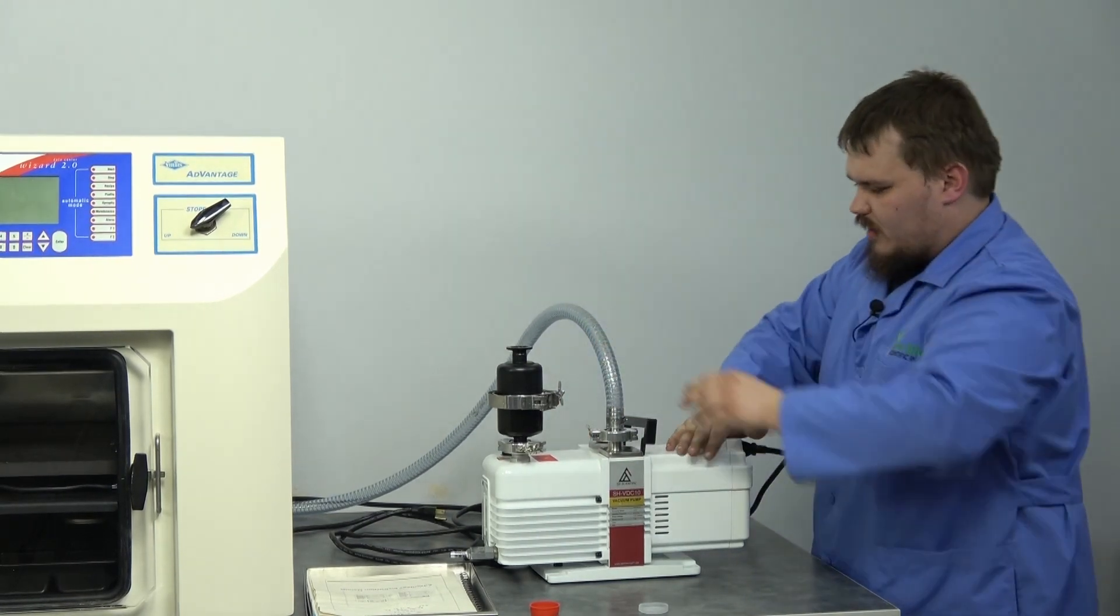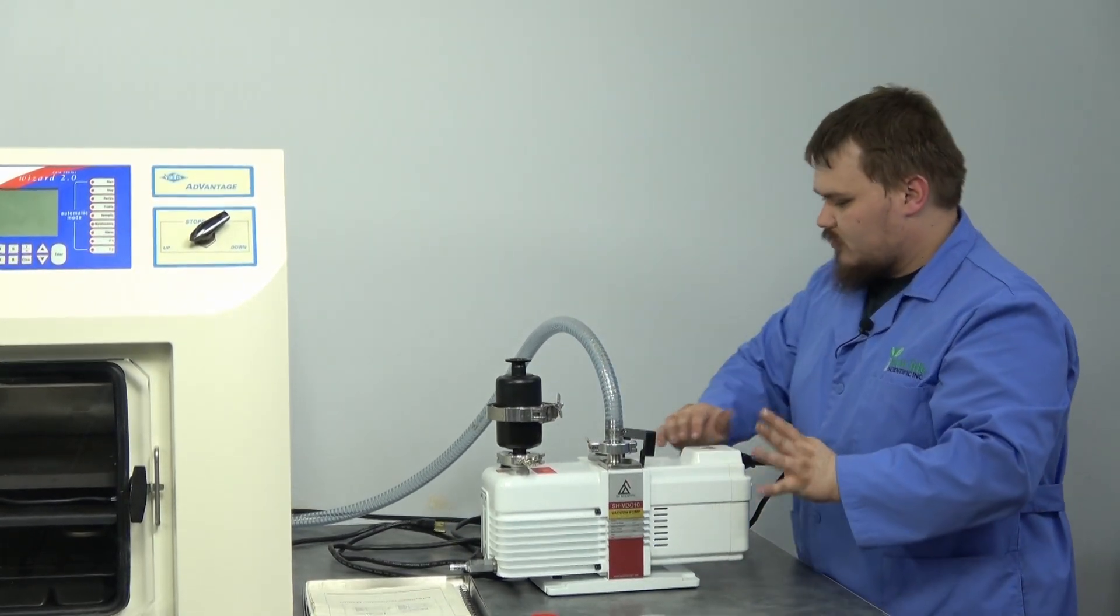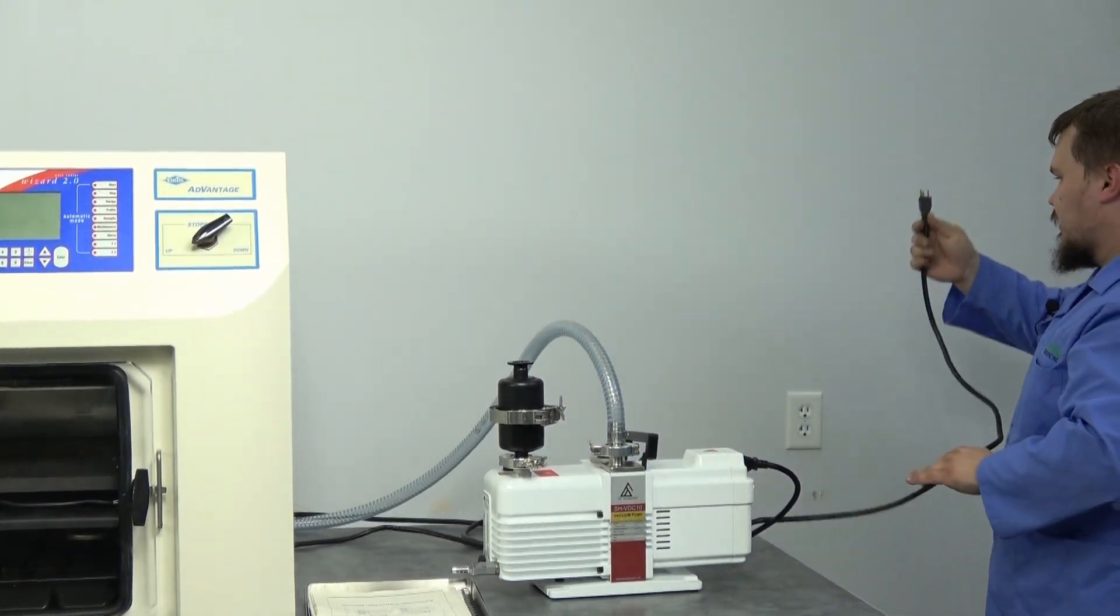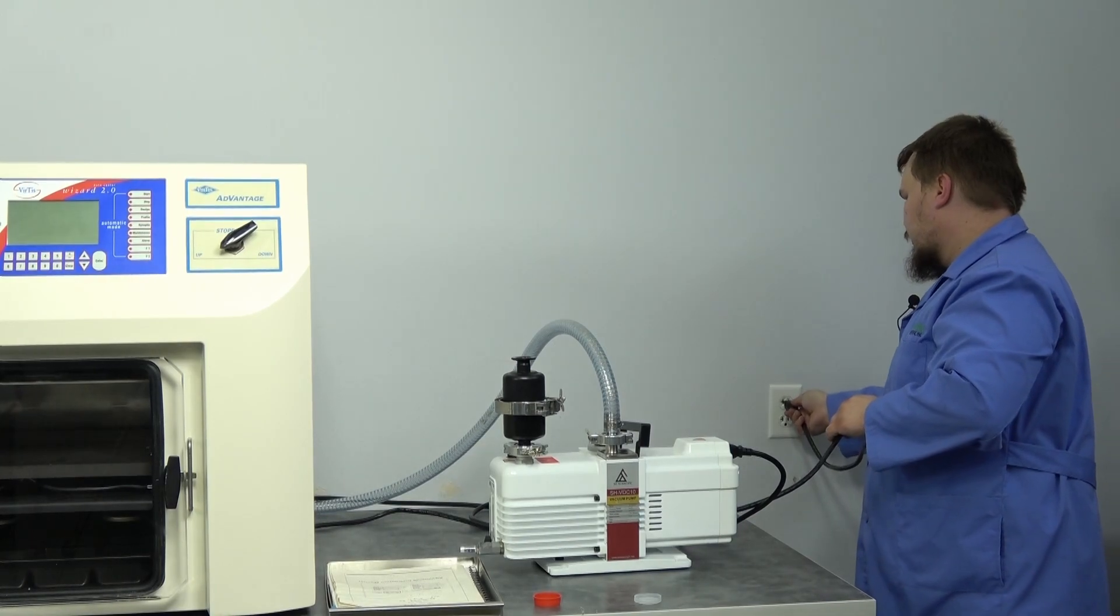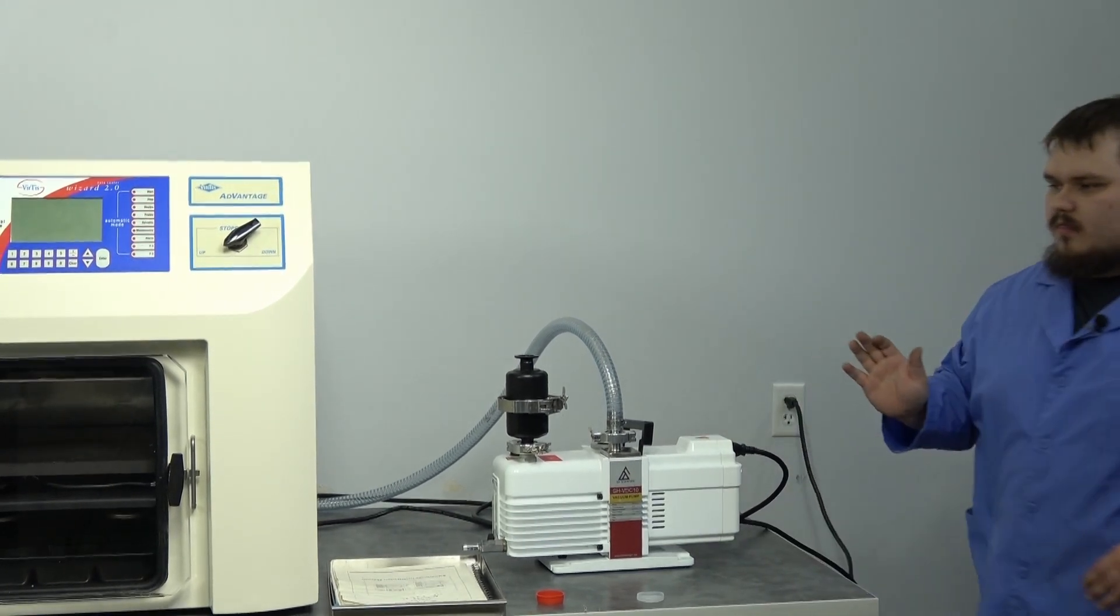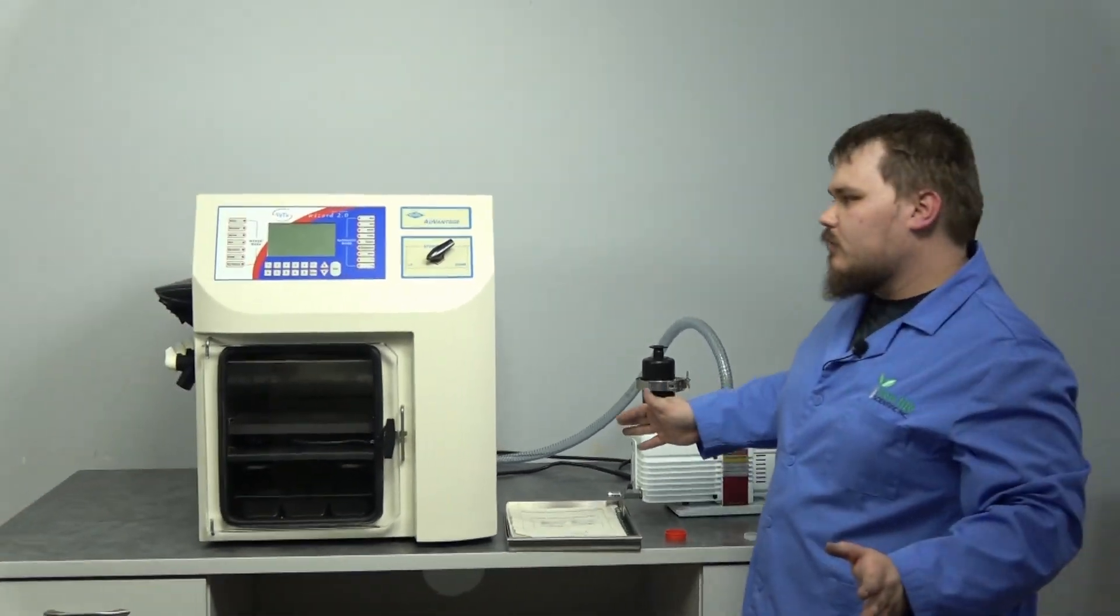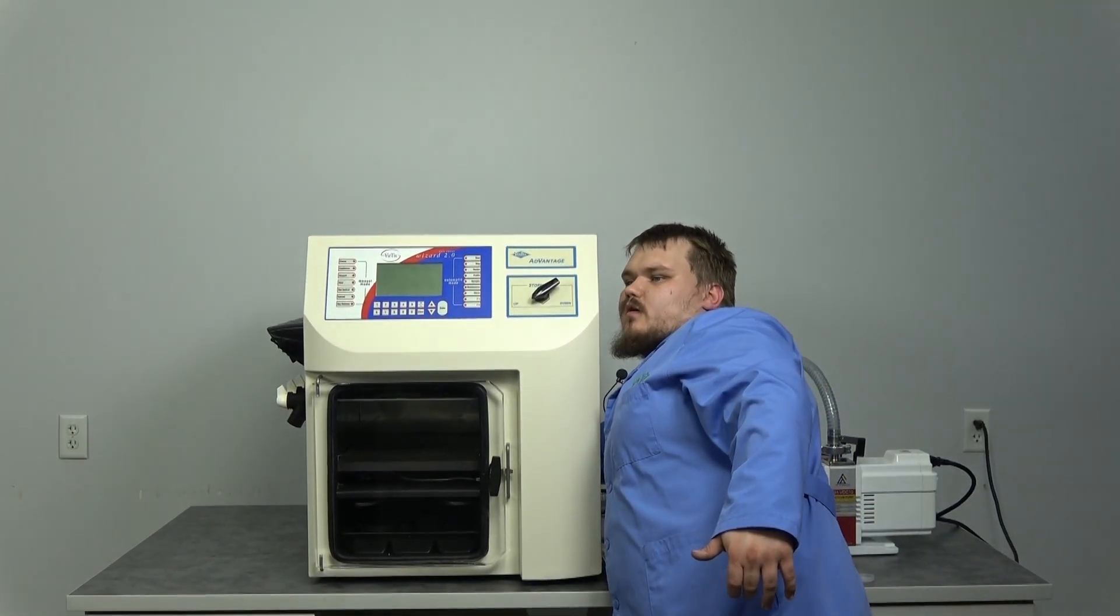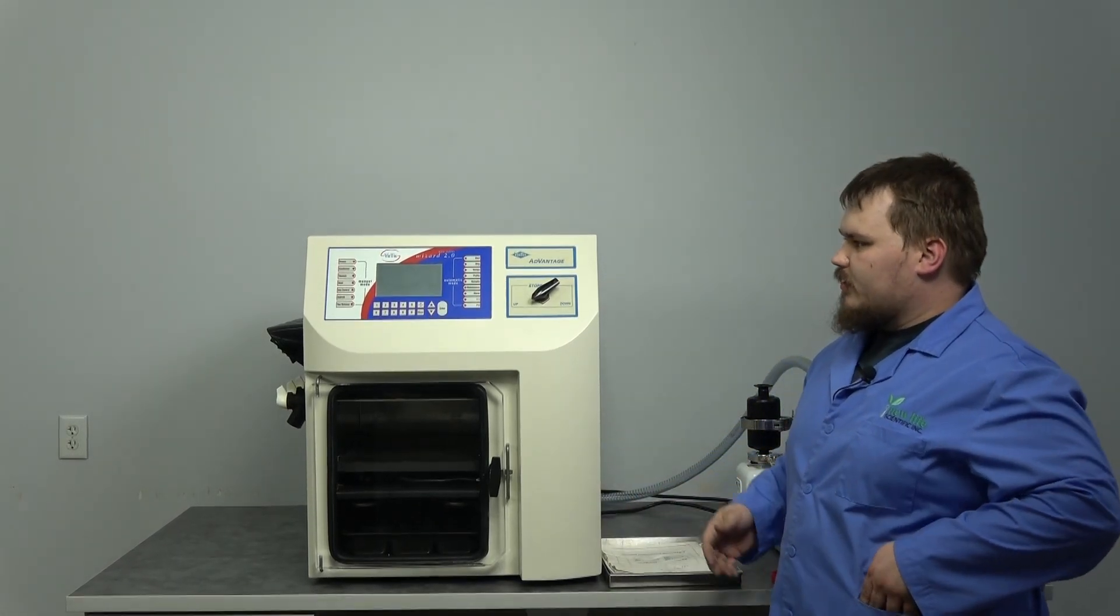From here, this side of the vacuum pump is done, and we're going to connect the machine to the wall outlet. From there, we can reach around the machine and flip the power button.